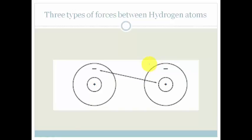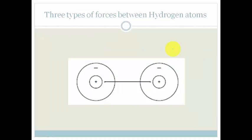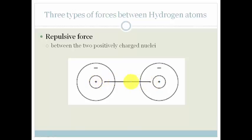The second type of force is the force of attraction between the electron on this side and the positive nucleus of that atom. Similarly, this electron is going to be attracted to that proton and vice versa. That is an attractive force between the nucleus of one atom and the electrons of the other. The third force is again repulsive, but this is between the nucleus of this atom and the nucleus of that atom, which makes sense because both are positively charged. These three forces play a part in how the atoms bond.